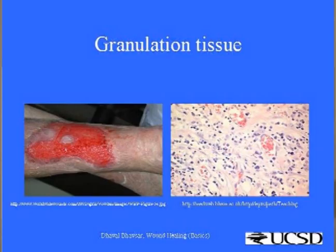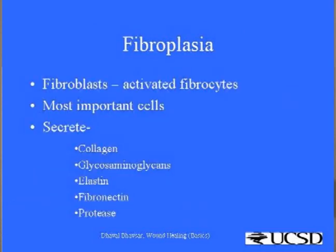In a surgically created wound we do not see granulation tissue, but in a large exposed wound — as shown in this photograph — the eventual result of the proliferation phase is formation of granulation tissue. It is a highly vascular bed that will take a skin graft.